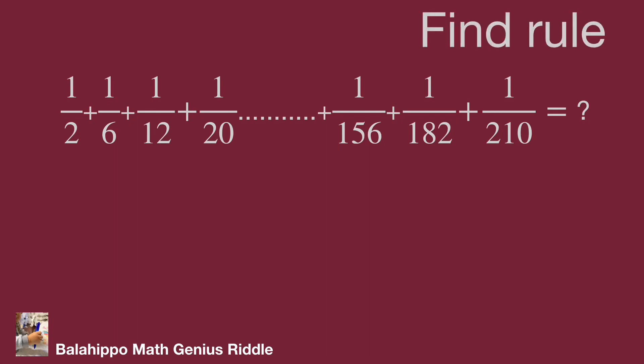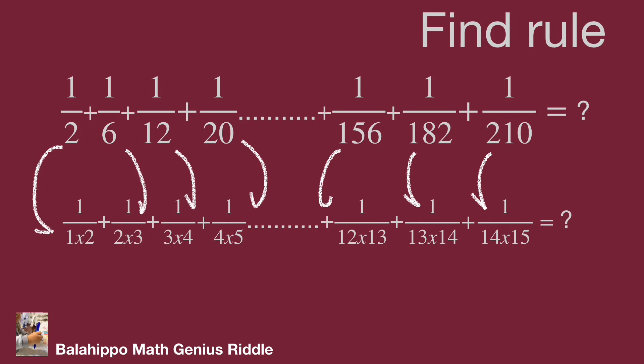Therefore, I'm going to find the rule. I find each number of denominators can factorize to the multiple result of two values. That is 2 equal to 1 times 2, 6 equal to 2 times 3, 12 equal to 3 times 4, and that 182 equal to 13 times 14, 210 equal to 14 times 15.